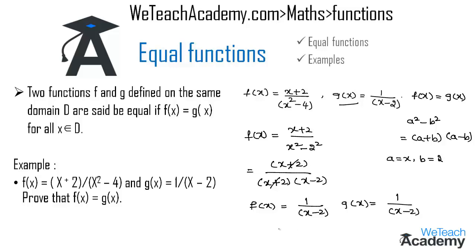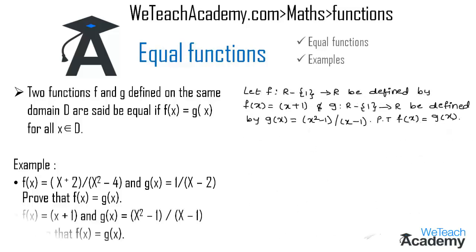The second example: f is a function from ℝ\ {1} to ℝ defined by f(x) = x + 1, and g is a function from ℝ\ {1} to ℝ defined by g(x) = (x² - 1) / (x - 1). We have to prove that f(x) = g(x).